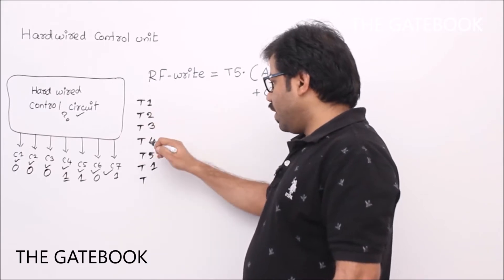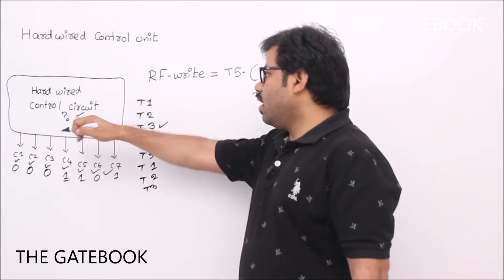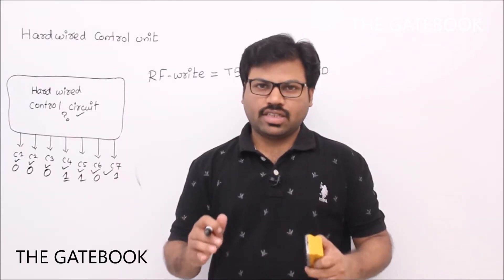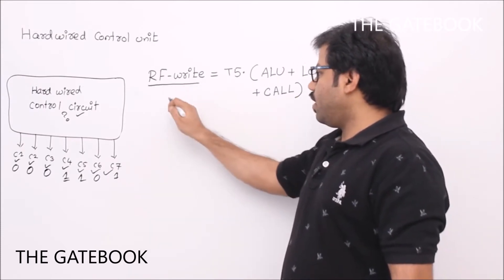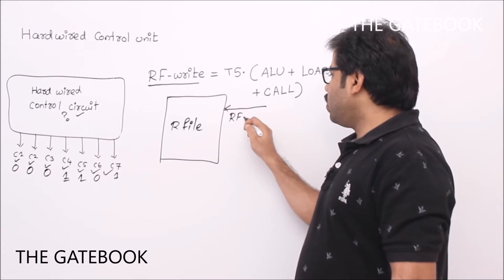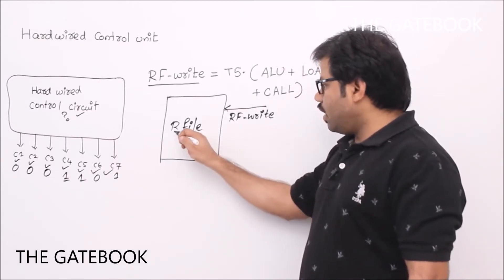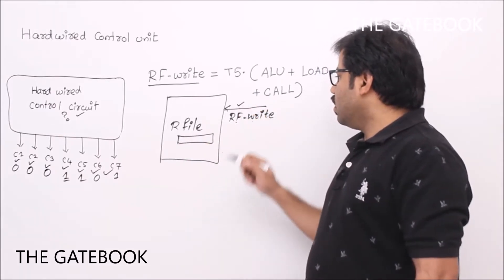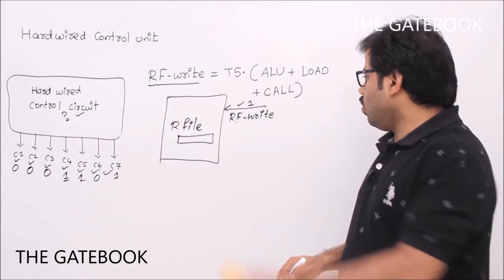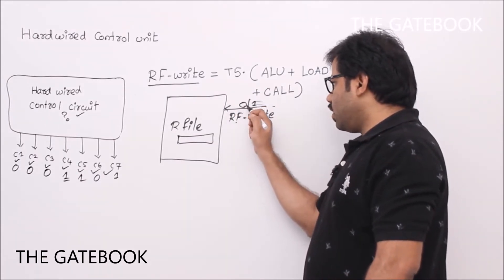There are five stages: fetch, decode, ALU, memory, then write, and again fetch. Depending on the stage, proper control signals will be automatically generated by your hardwired control unit. To create that circuit, we need to know what inputs to take. Now we'll see one particular signal — there is a signal called RF write. For the register file, RF write means to write into the register. The control circuit generates either 0 or 1 through this signal.